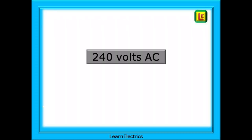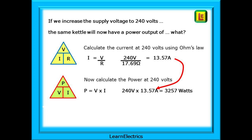Let's begin by looking at 240 volts AC. This used to be the standard voltage in the UK, and back in the 1990s it was decided to standardize voltages across Europe, giving us a nominal voltage of 230 volts. However, the actual supply voltage in the UK is still effectively at 240 volts. So let's look first at how this small difference affects the kettle.